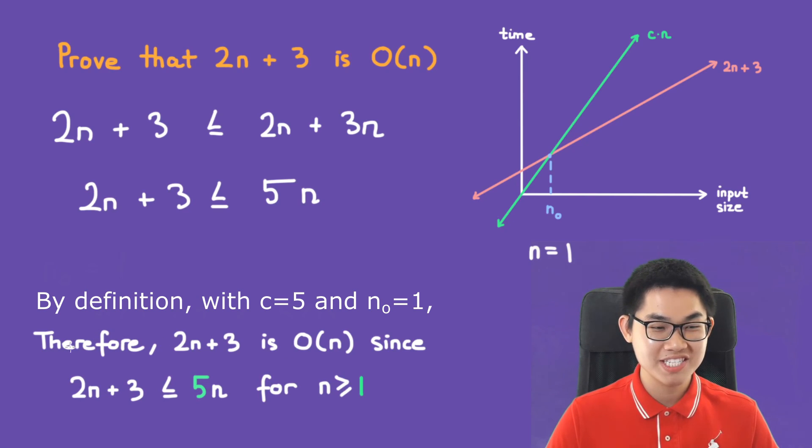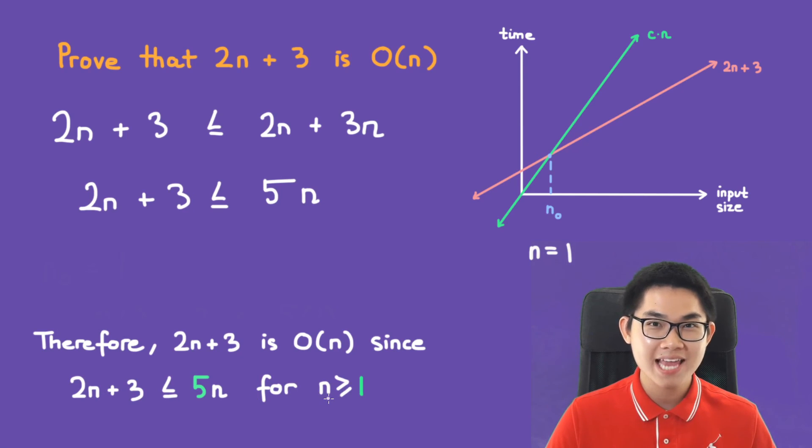And that's basically it. Therefore, 2n plus 3 is O(n) since 2n plus 3 is less than or equal to 5 times n. We found our c for n is greater than or equal to 1.